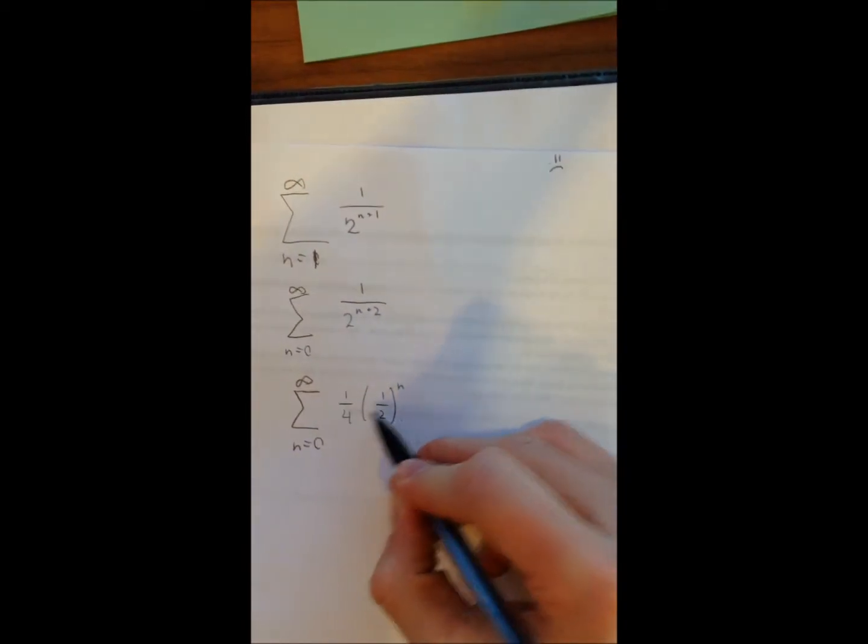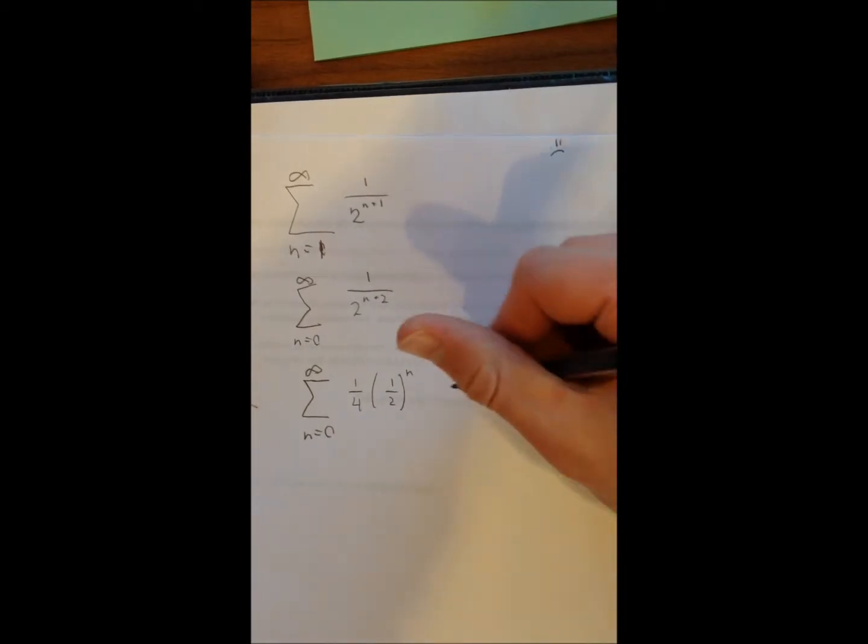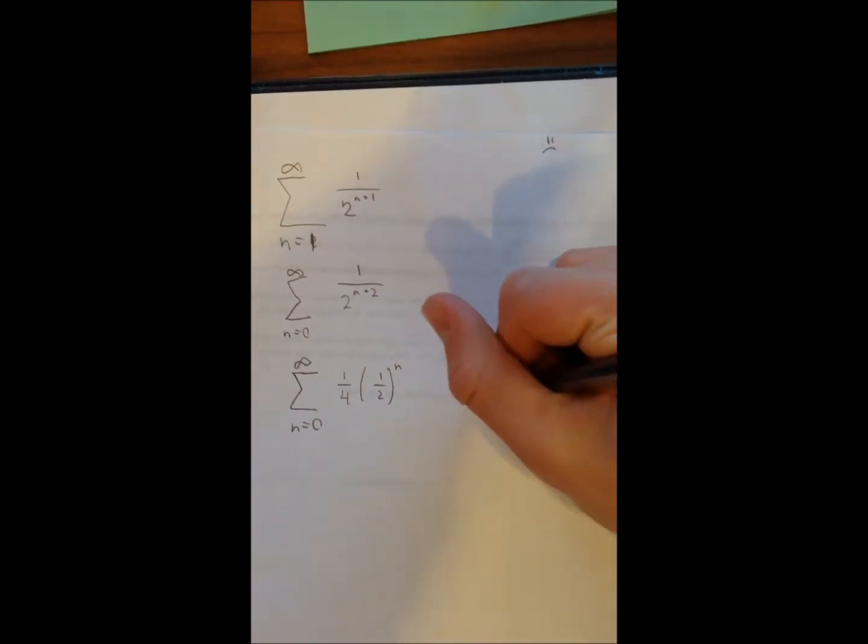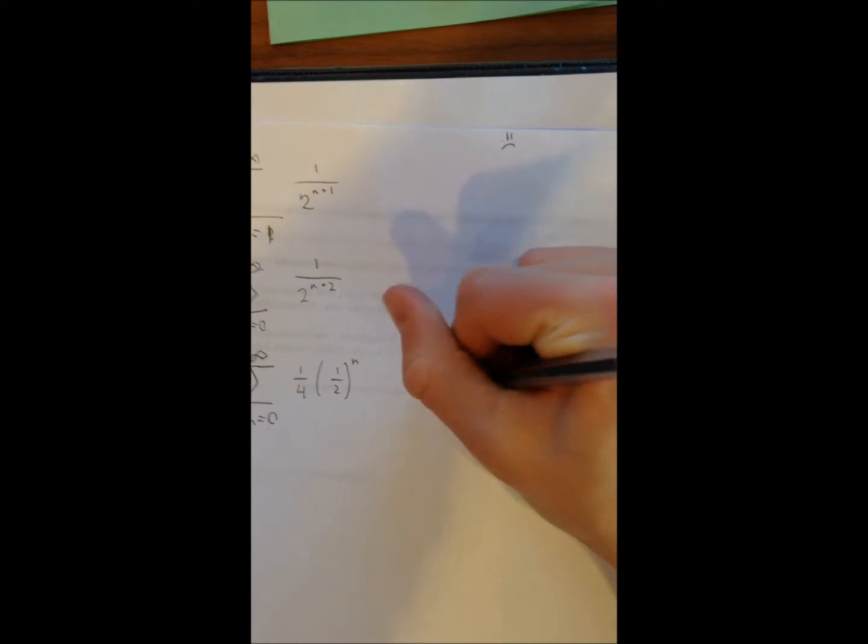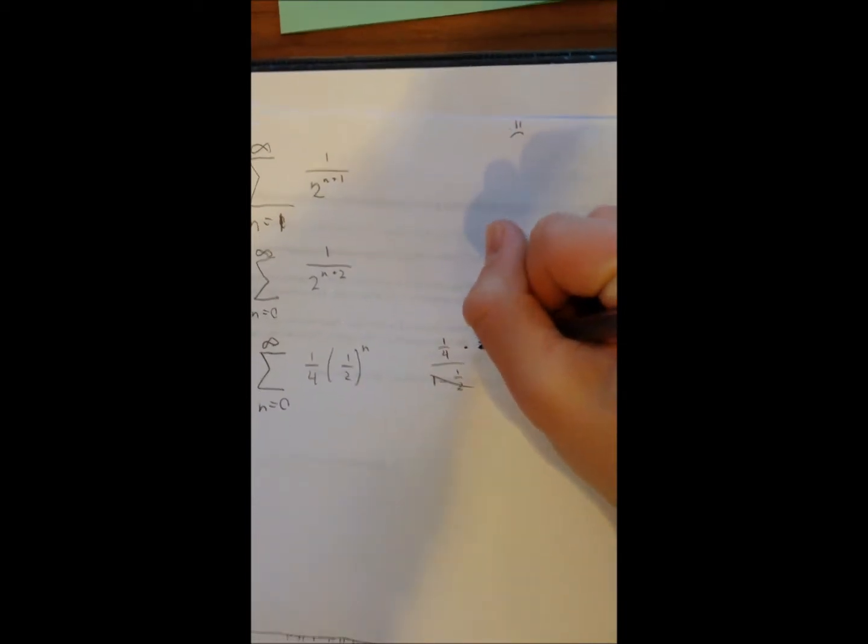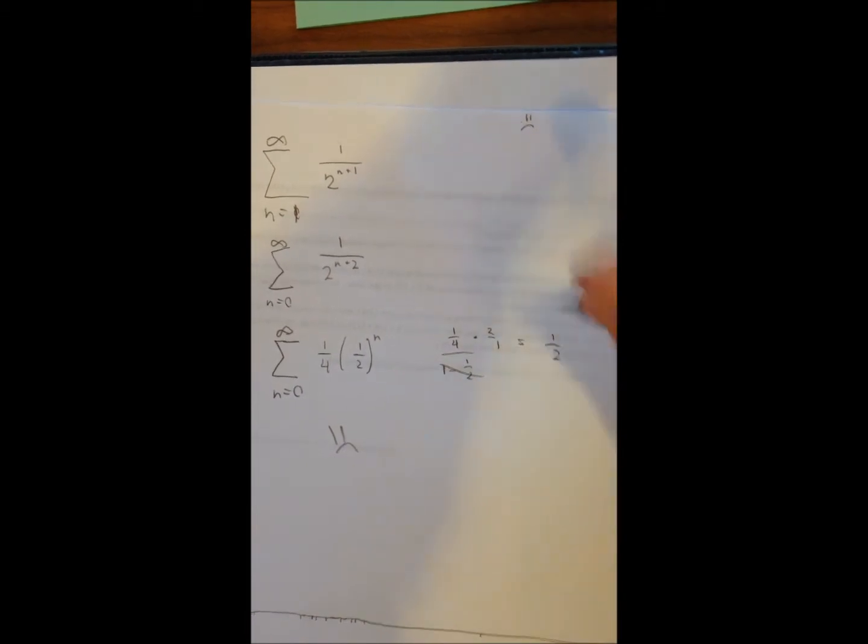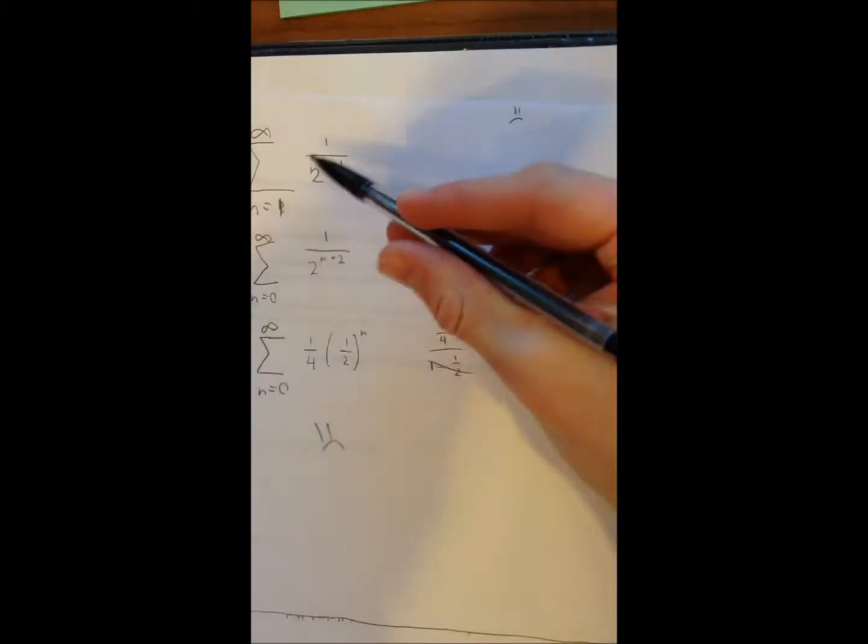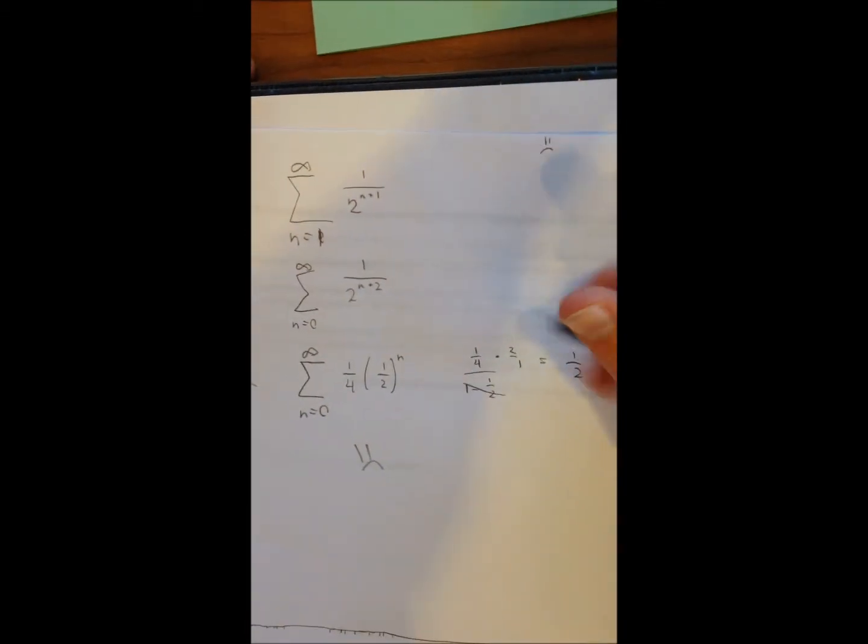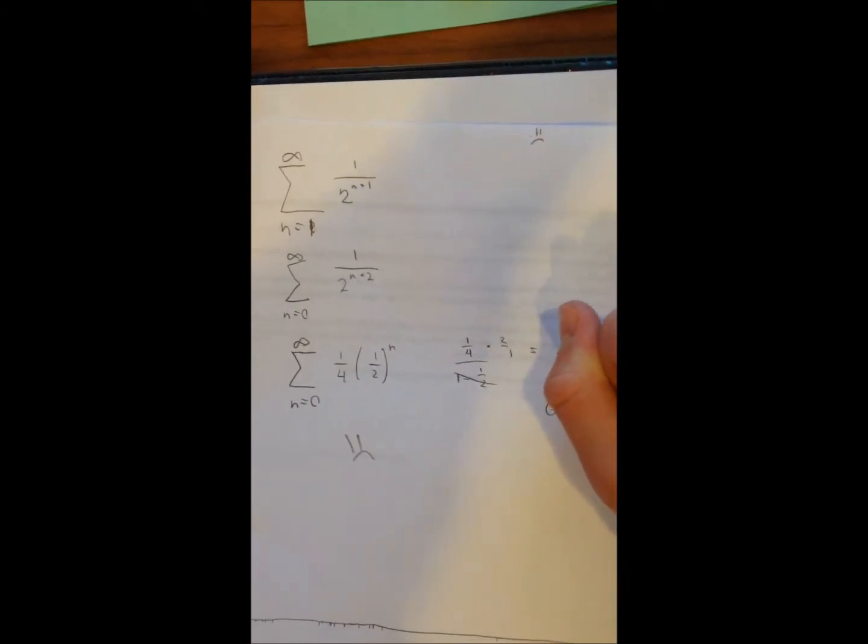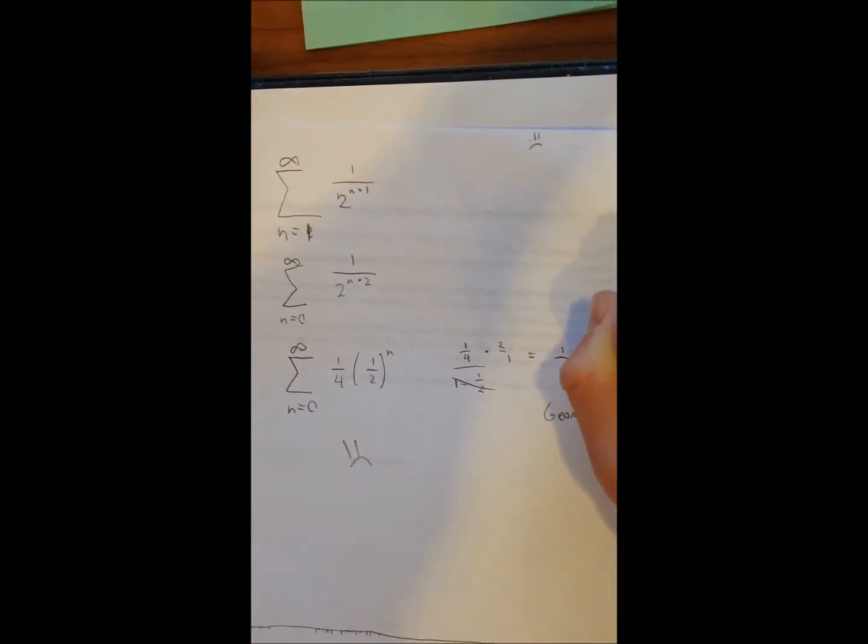So this is our a and this is our r, and we had a over 1 minus r, and that equals 1 half. So we know that we're only removing 1 half of the table by the geometric series.